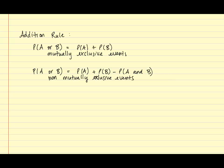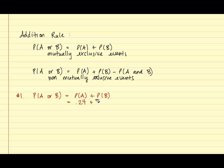For problem number one, we are trying to find the probability of getting a caramel or a mint. Since you cannot have a caramel and mint candy at the same time, we are going to use the first formula: P(A or B) = P(A) + P(B). The probability of getting a caramel is 0.24, and the probability of getting a mint is 0.10. So the probability of getting a caramel or a mint is 0.34.